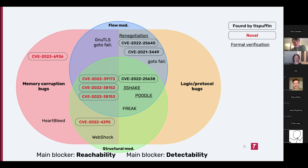There are also vulnerabilities reachable only through structural modification — for example, modifying a field within a message. If the first message contains a list of ciphers, you might reach a bug by sending a very large list or an empty list. To summarize: the two main blockers for fuzzing or security testing are first reaching the bug, and second detecting it. For memory corruption bugs detection is easy but reachability is hard; for logic bugs like authentication bypasses the main blocker is detection since they don't crash the program.